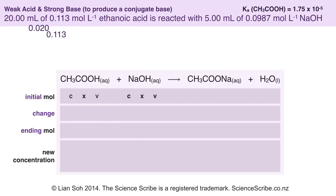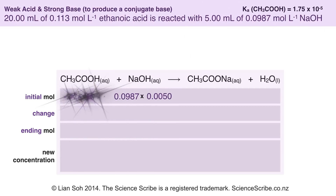My ethanoic acid is 20 mL, so I convert that into litres with a concentration of 0.113 moles per litre. I do the same for sodium hydroxide — the 5 mL has to change to litres, giving 0.0050 L. Punching those into the calculator gives the initial moles for both species.